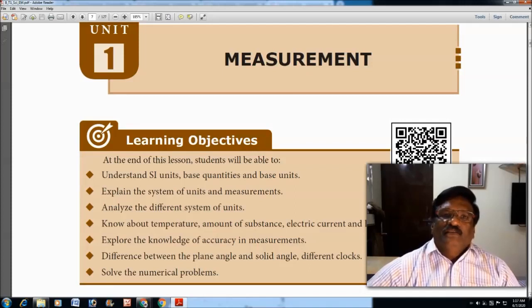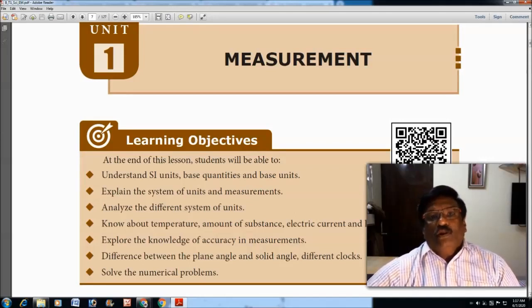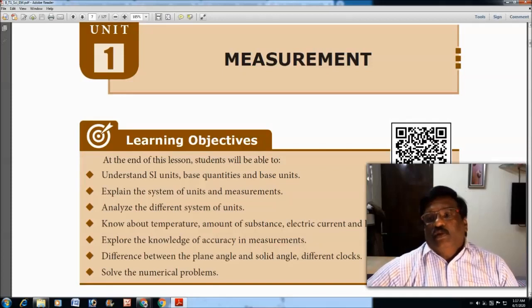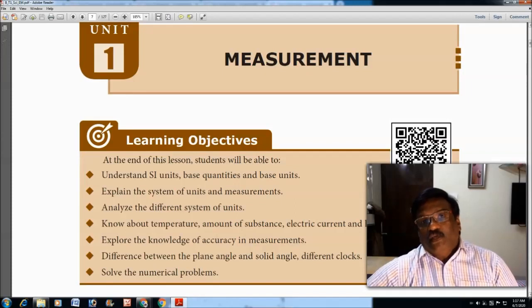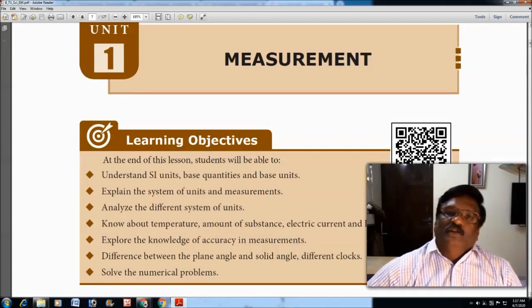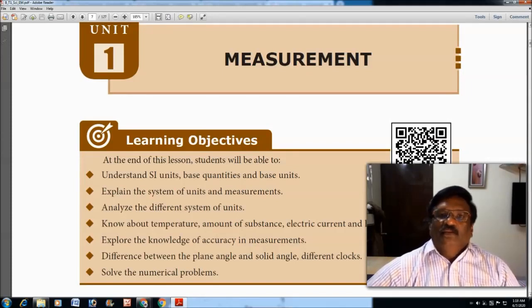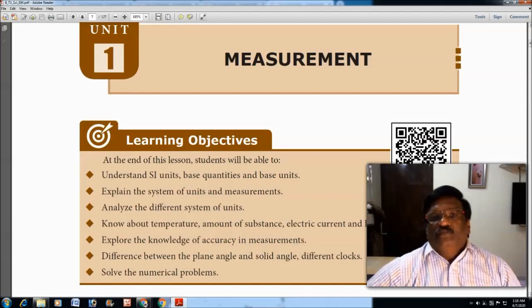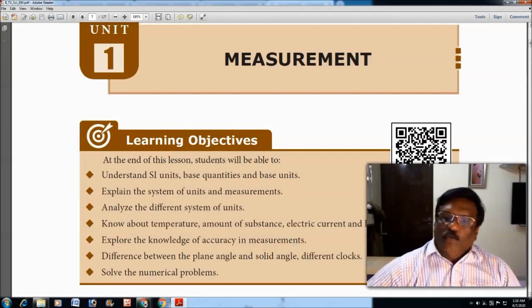So what are the fundamental quantities? There are seven standard basic parameters: length, mass, and time. Apart from this, there are also other four fundamental quantities that have been discussed last year, like electric current, luminosity, and amount of substance. These are also fundamental quantities.